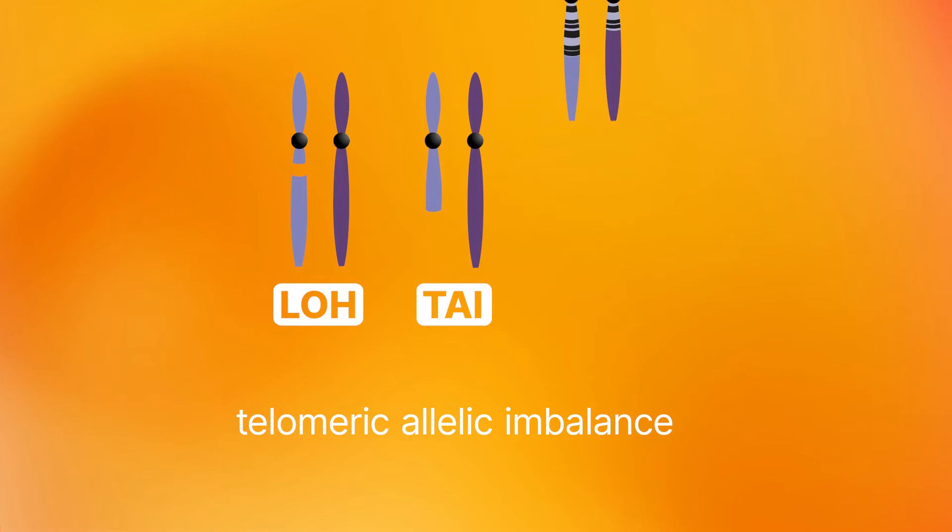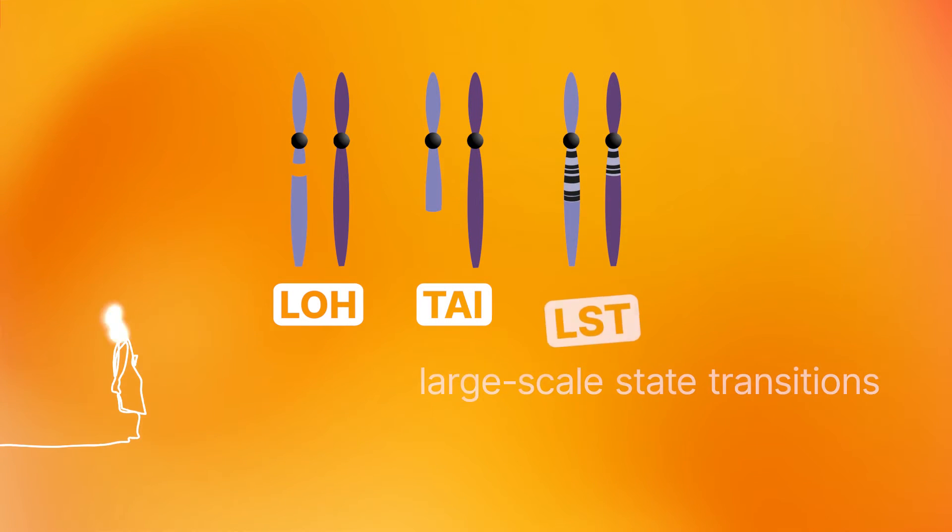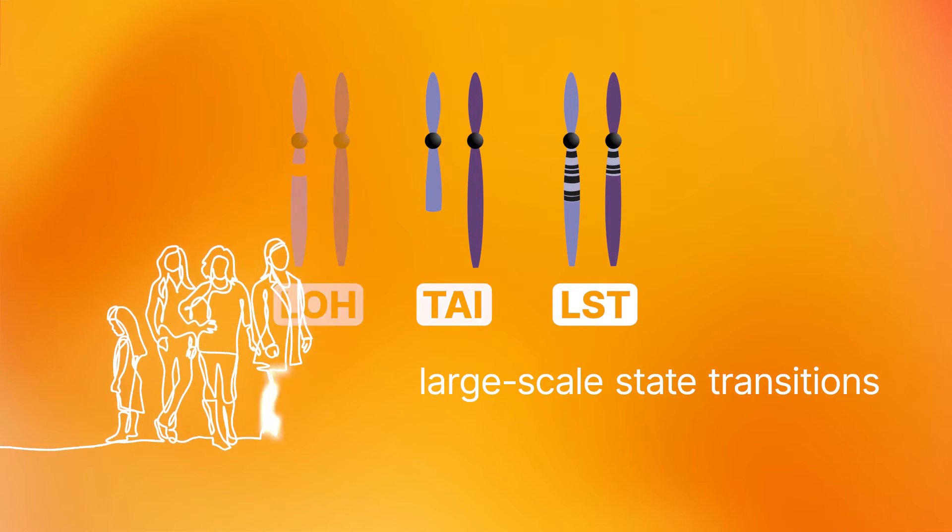Signatures of genomic scarring can include loss of heterozygosity, telomeric imbalances, and large-scale transitions. These can be measured alone or as a composite score.